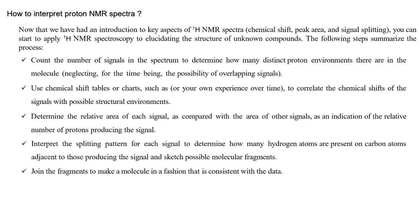Neglecting for the time being the possibility of overlapping signals - we will see later that in some cases there are some overlapping of signals; we will see this in later videos. Then the second point: use the chemical shift table or chart, or you may have some experience over time, and correlate the chemical shift of the signal with possible structural environments. Then the third point is determine the relative areas of each signal as compared with the area of other signals as an indication of the relative number of protons producing the signal.